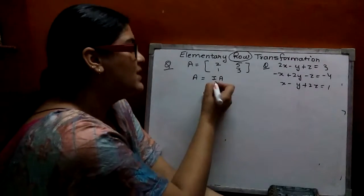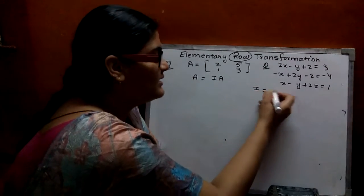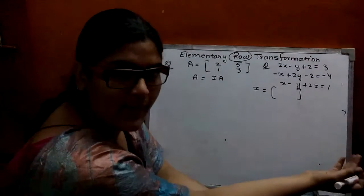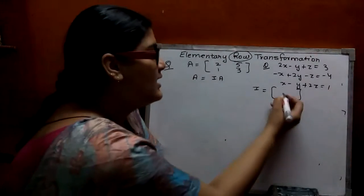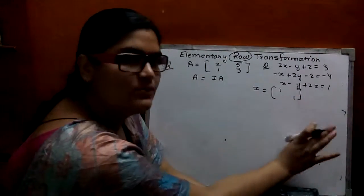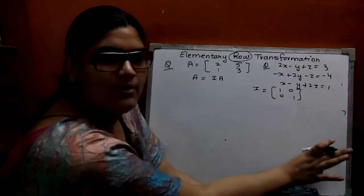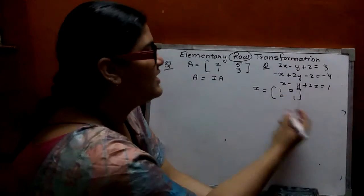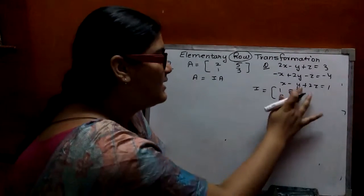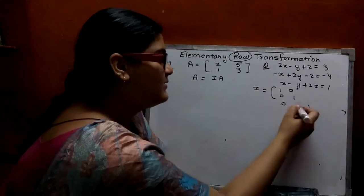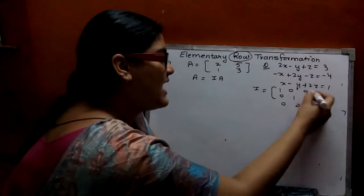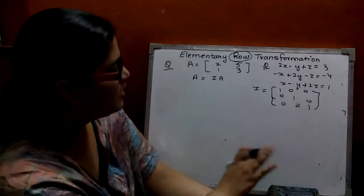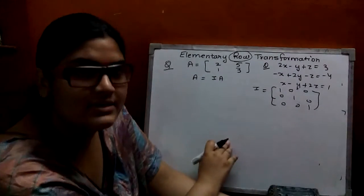Here, I is the identity matrix. If you have to find out the identity matrix of 2 by 2 order, then the diagonals remain 1 and all other elements remain 0. If 3 by 3, then the diagonals have 1 and all other elements are 0.